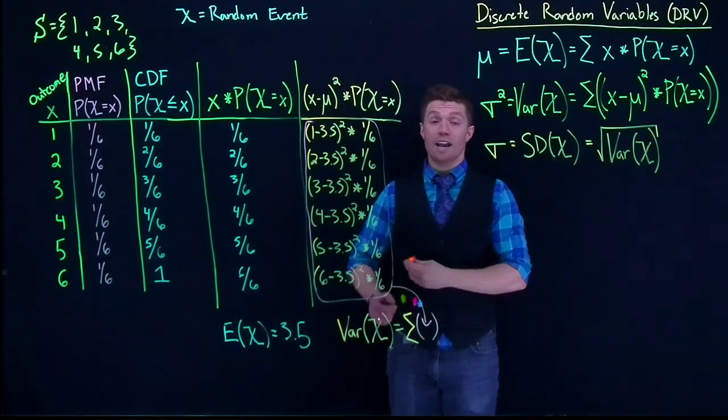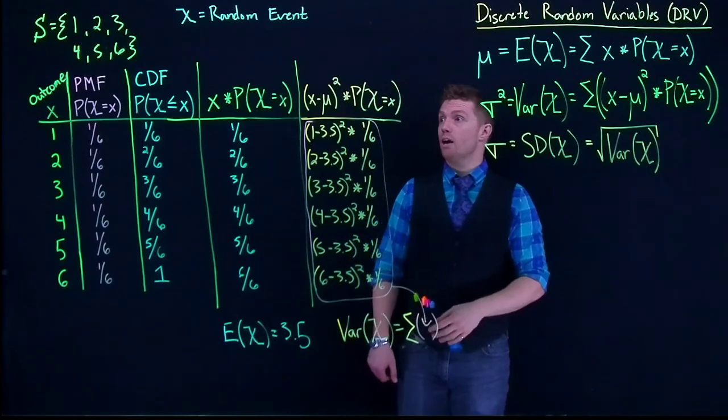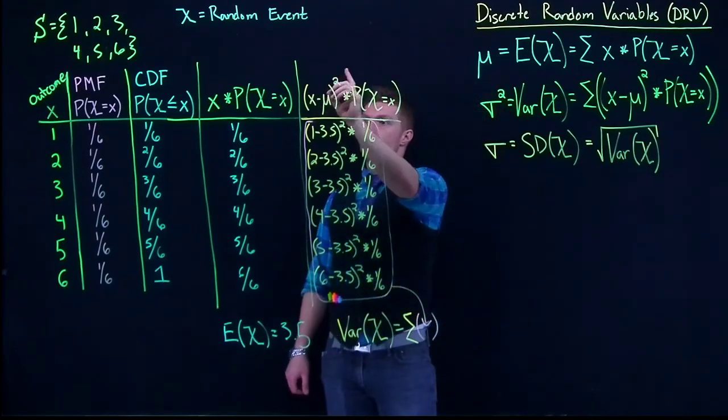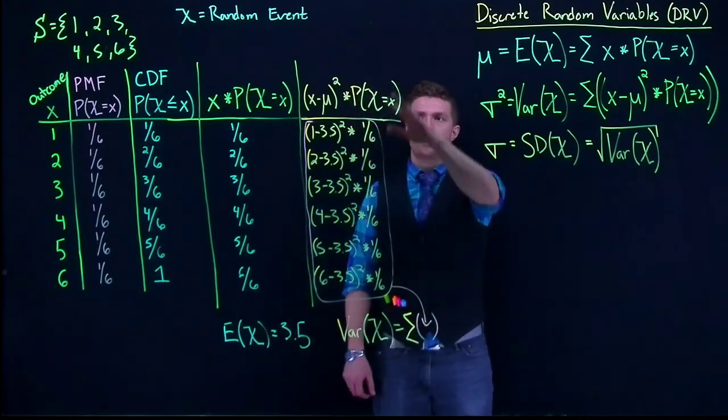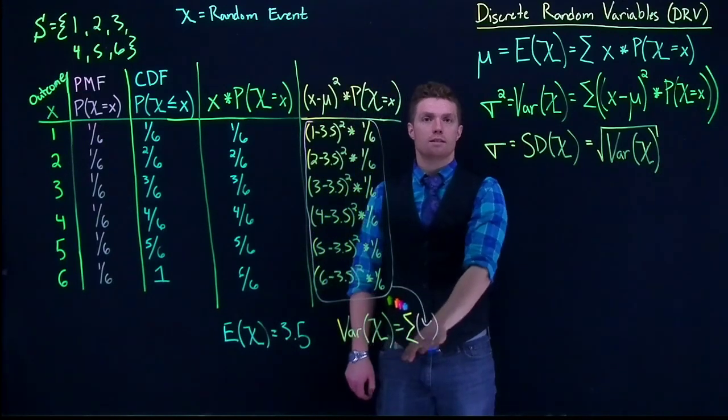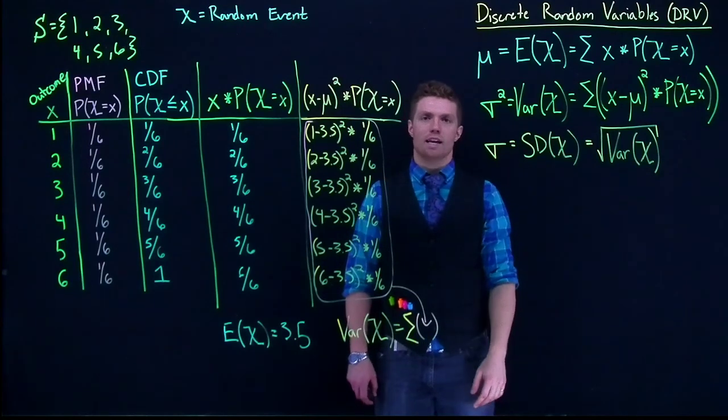So this is how, for any discrete random variable, how we could calculate out the mean or the expected value, how we can calculate out the variance, and how we can calculate out the standard deviation.